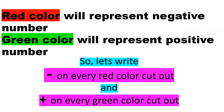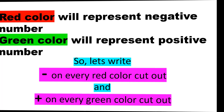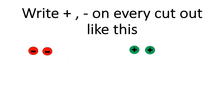The red color cutout will represent the negative integer and the green color cutout will represent the positive number. We will write minus on every red color cutout and plus on every green color cutout. On every cutout, write minus with a marker or any color that highlights well, and plus on every green color cutout.